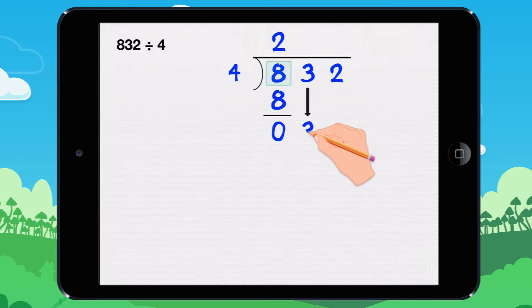Bring down the 3. How many times does 3 go into 4? It goes in 0 times, because 0 times 4 equals 0. 0 times 4 equals 0.